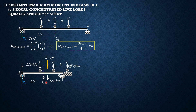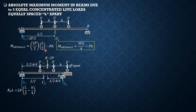We solve for R_A so we can find the absolute maximum moment under the load. The absolute maximum moment is R_A times the moment arm (L/2 minus H/4). Summing moments about B: R_A × L = 2P × (L/2 minus H/4), so R_A = 2P/L × (L/2 minus H/4). By Varignon's theorem, we use the resultant directly.